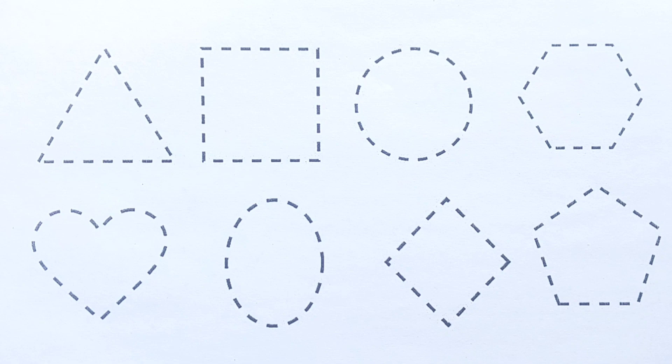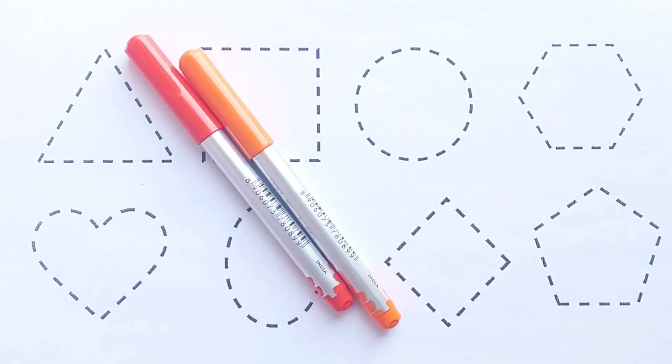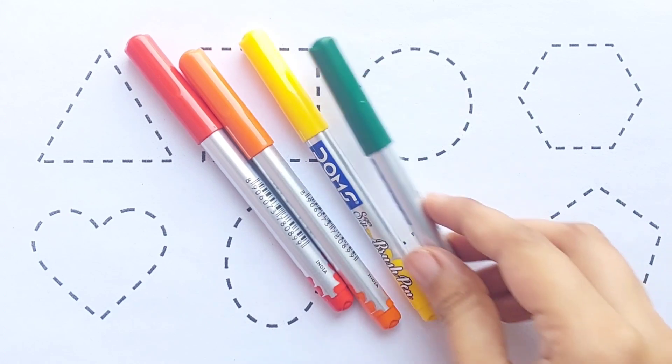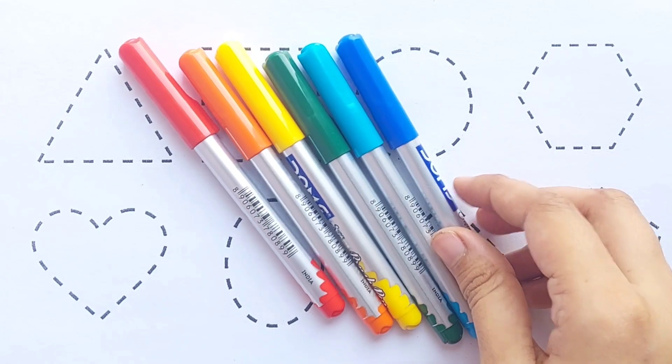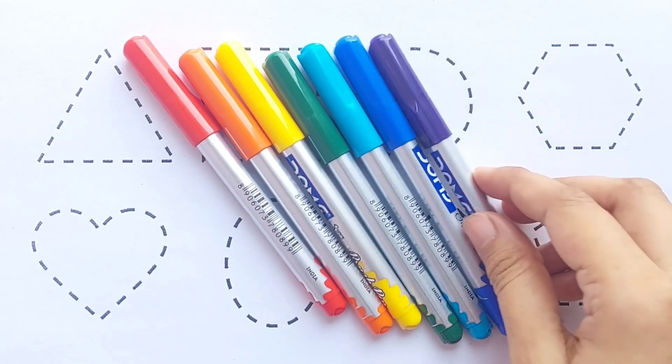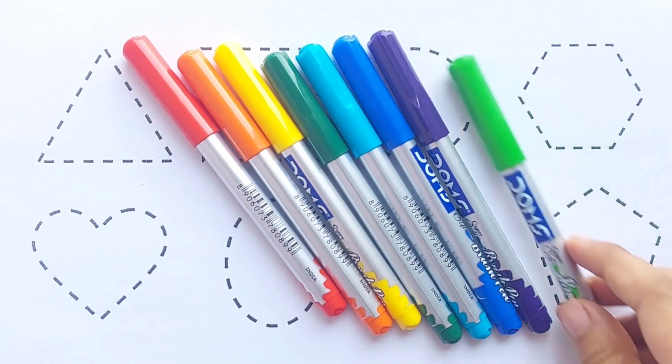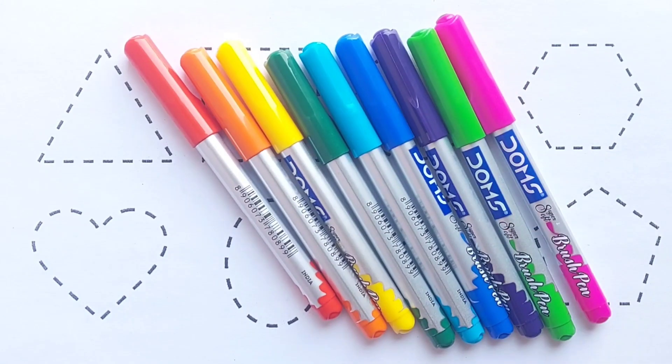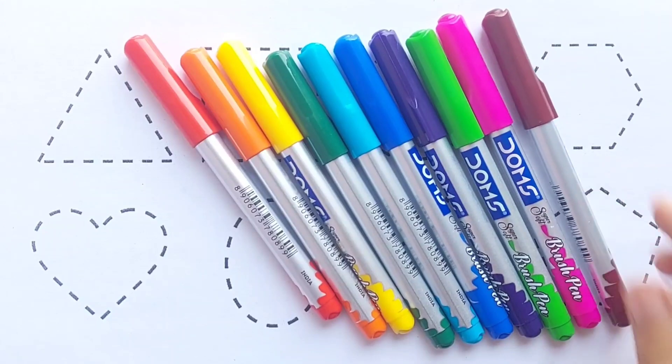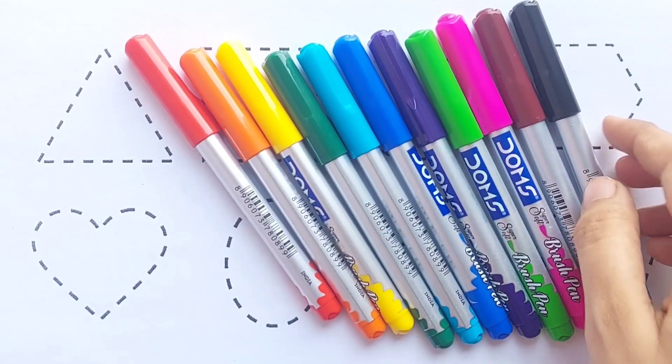Hello kids, let's learn how to draw shapes and colors. Red color, orange color, yellow color, green color, sky blue color, blue color, purple color, light green color, pink color, brown color, black color.